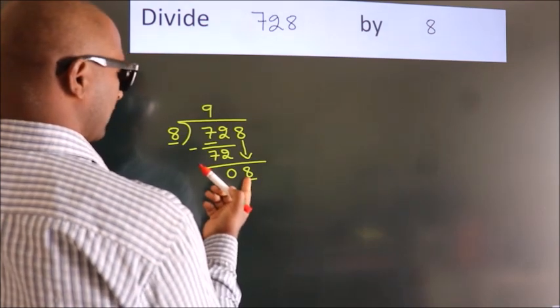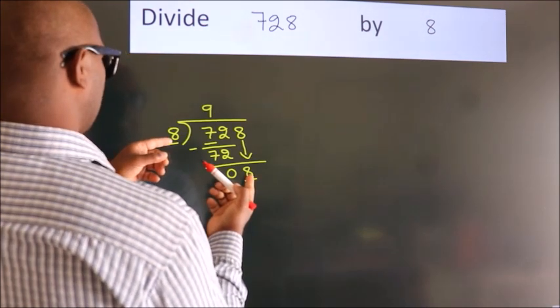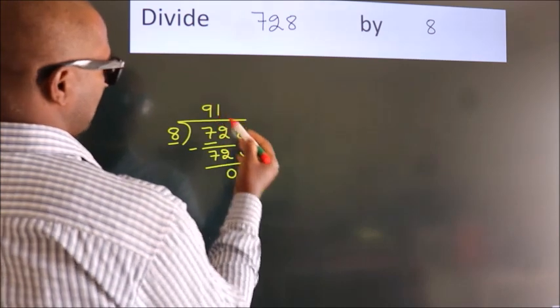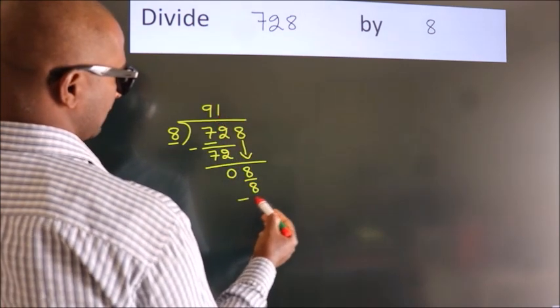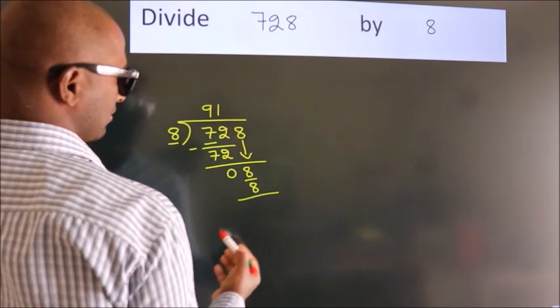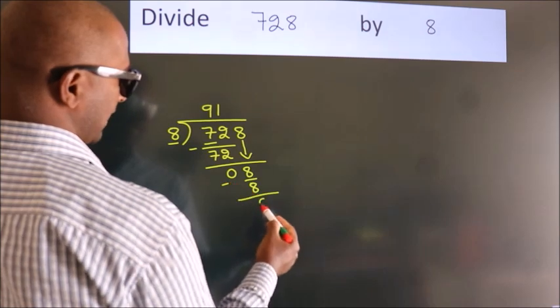When do we get 8? In the 8 table. 8 once, 8. Now we subtract, we get 0.